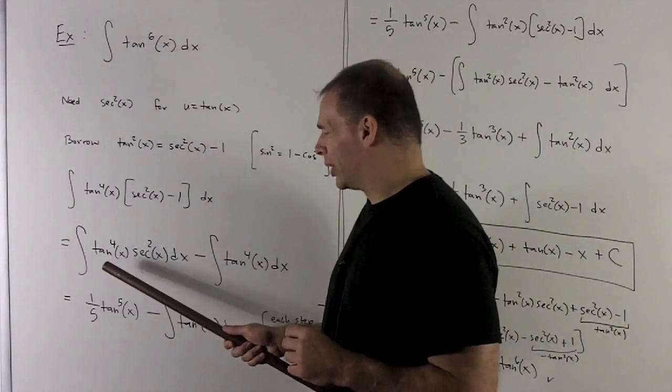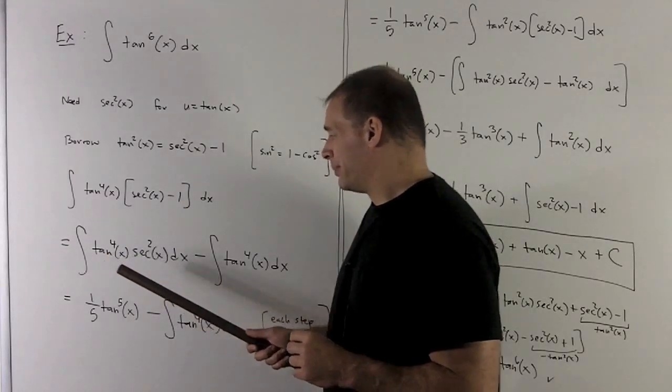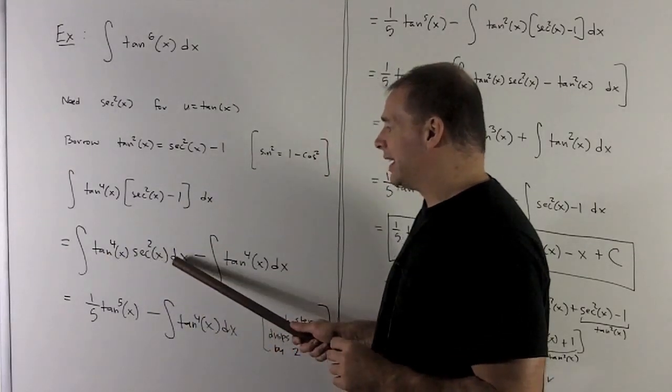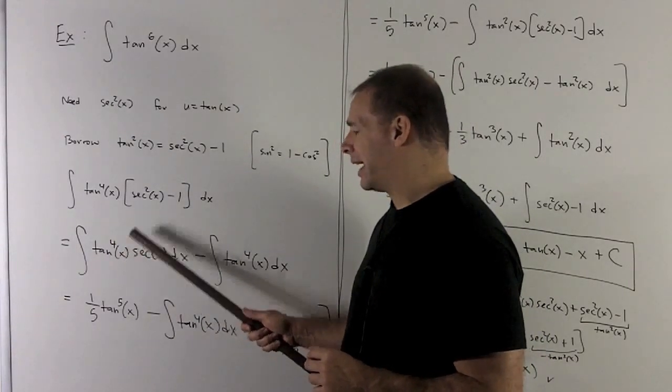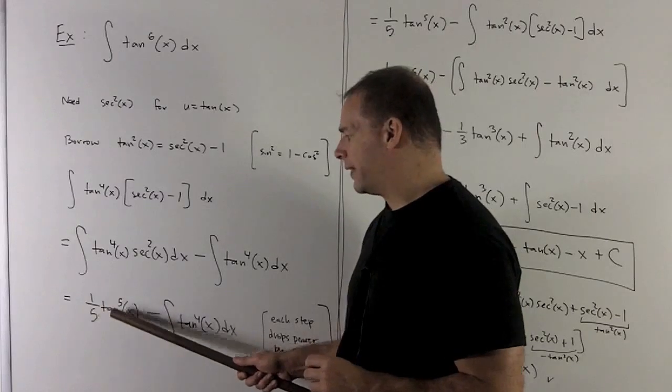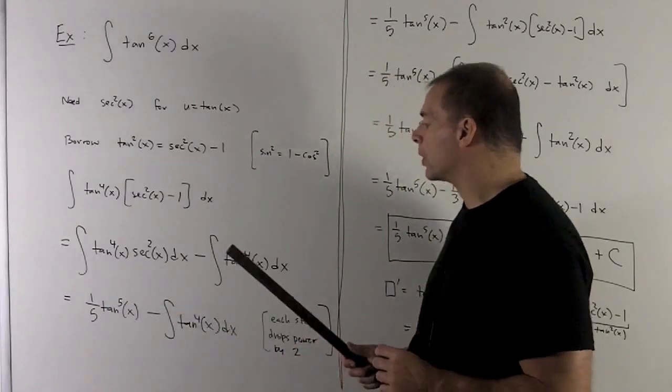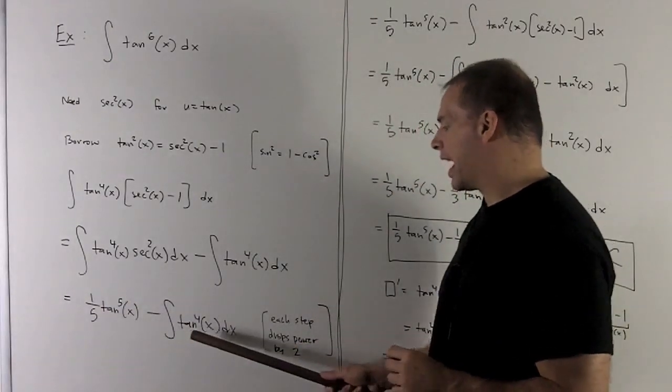So here, we're going to let u be equal to tangent of x. The du will be the secant squared dx. That leaves me with a u to the 4th. I take the antiderivative. I get 1/5 u to the 5th, and that gives me 1/5 tan to the 5th x. What's left over? I just carry along.